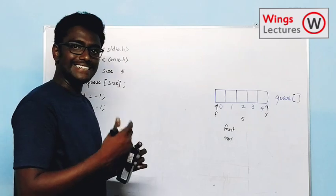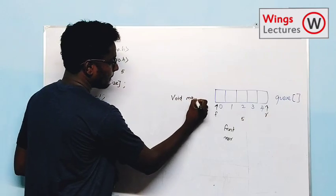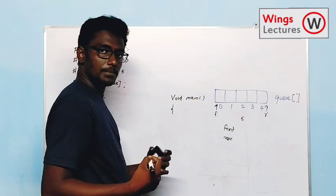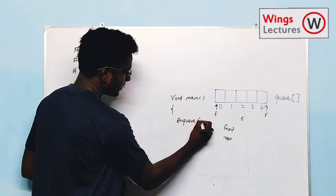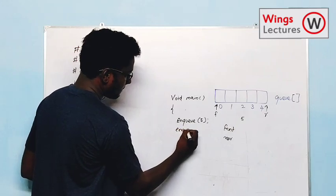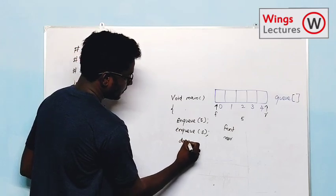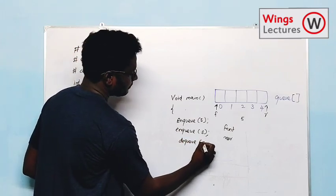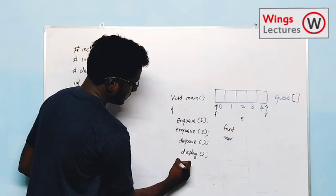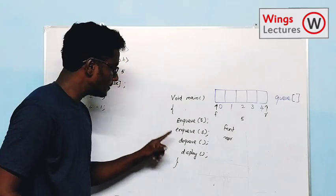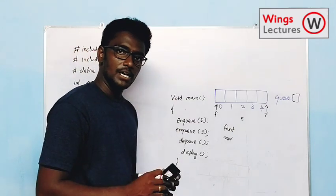Now I'm going to start inserting elements. Let me explain with the void main function. In the main function, the operations I'm going to perform are: enqueue 5, enqueue 3, dequeue, and display. So here I'm going to perform two insert operations and one deletion operation, and then display all the elements from the queue.